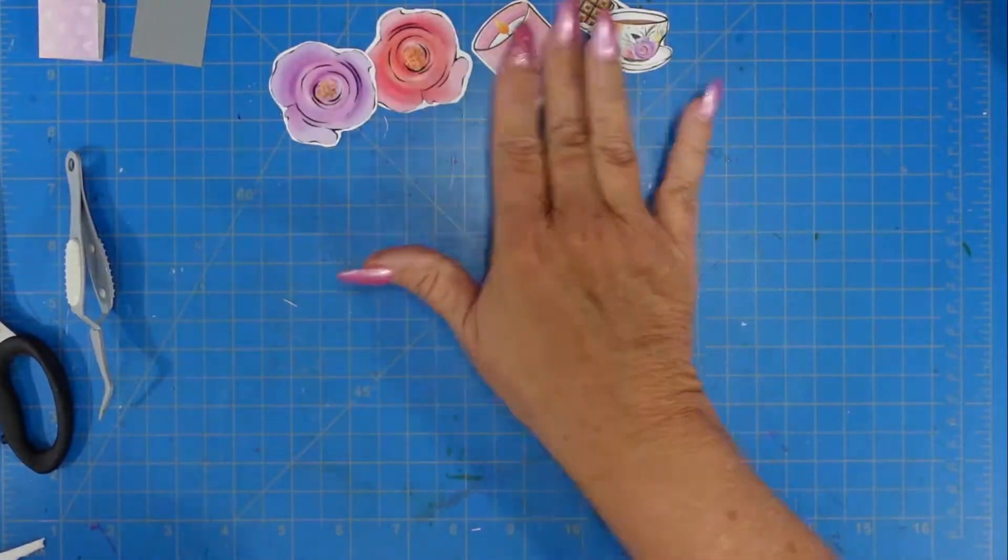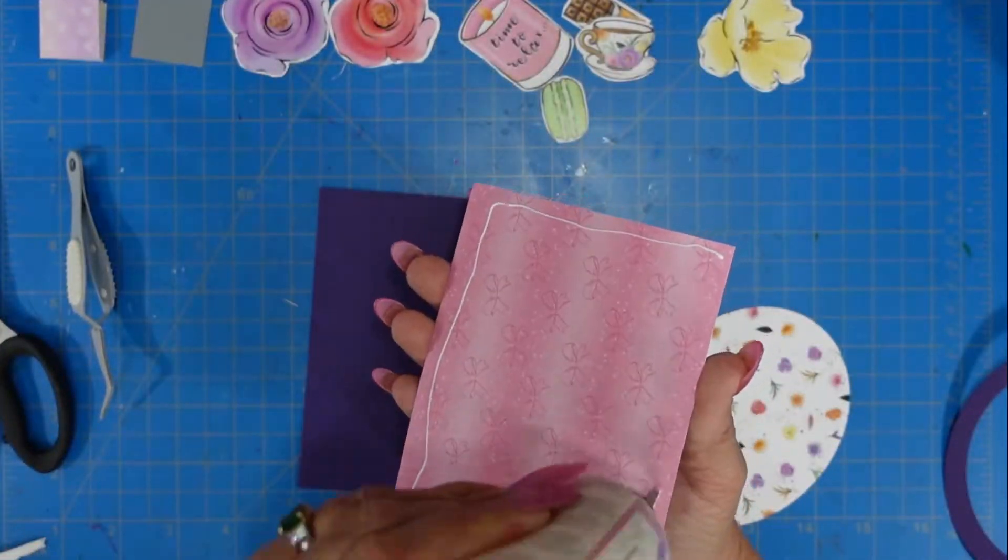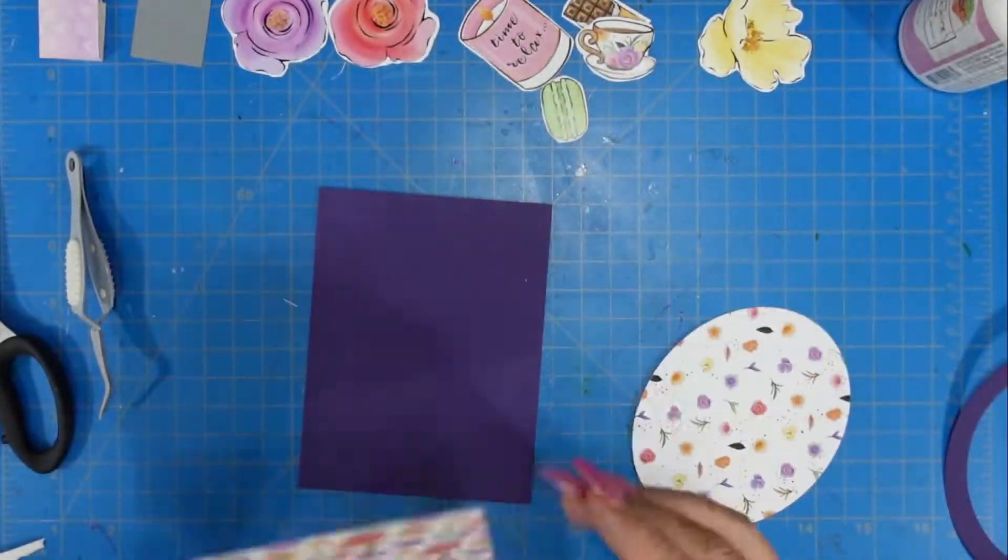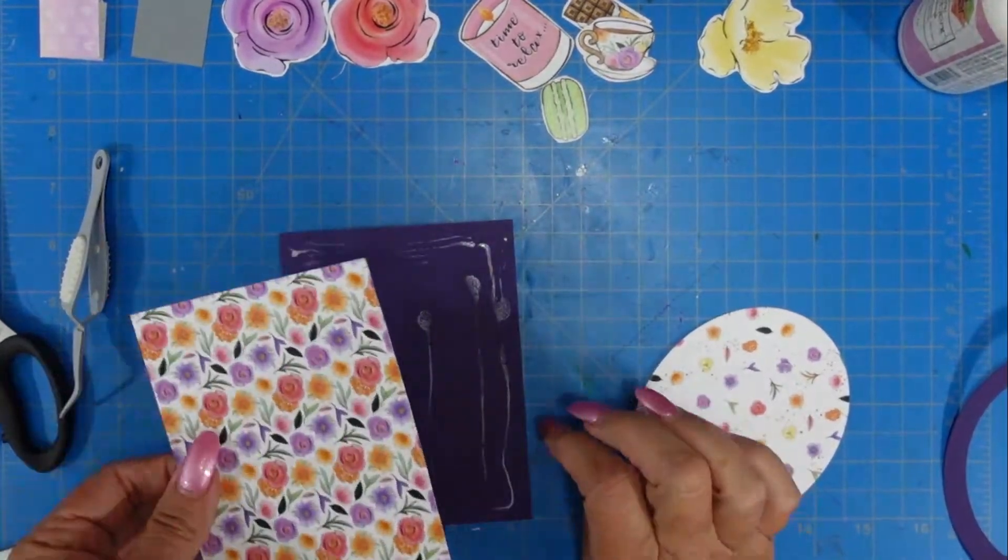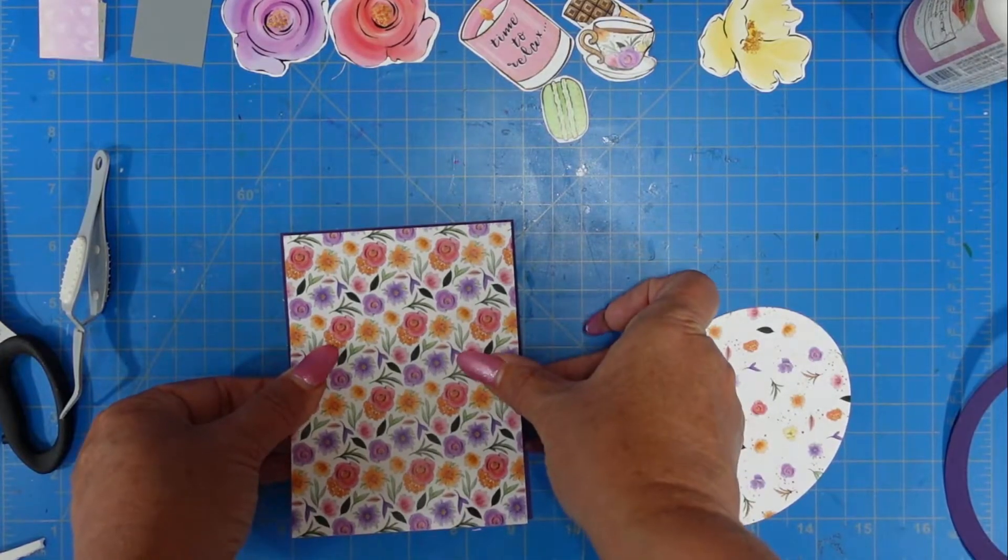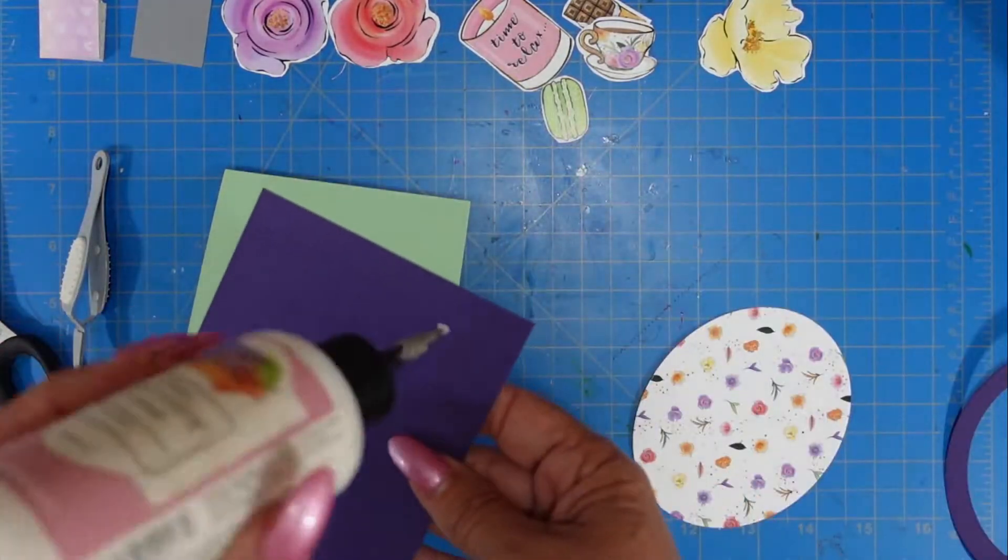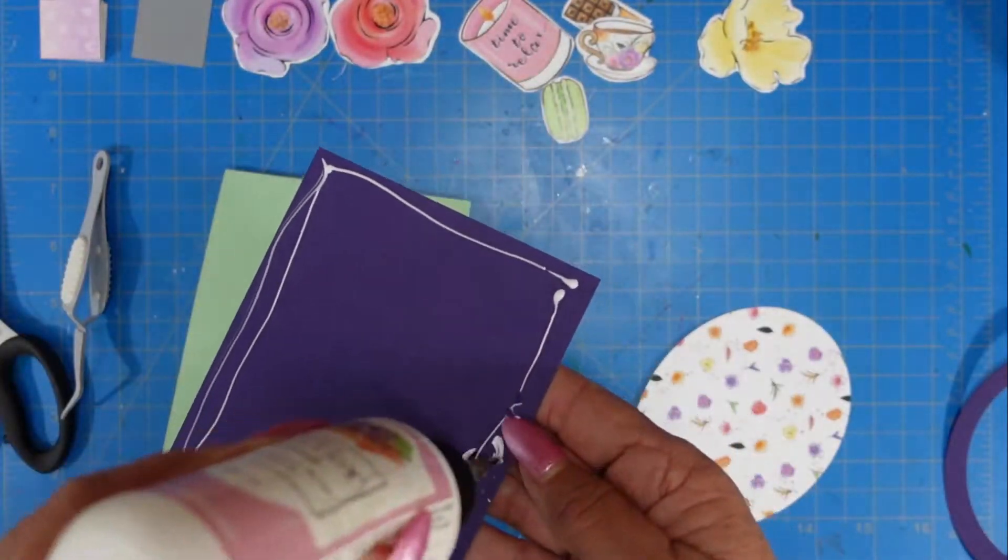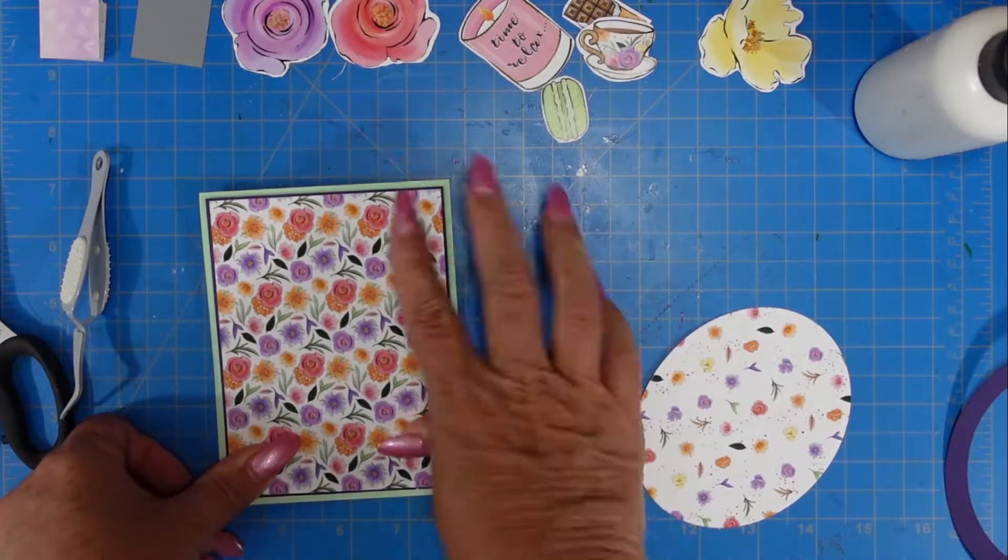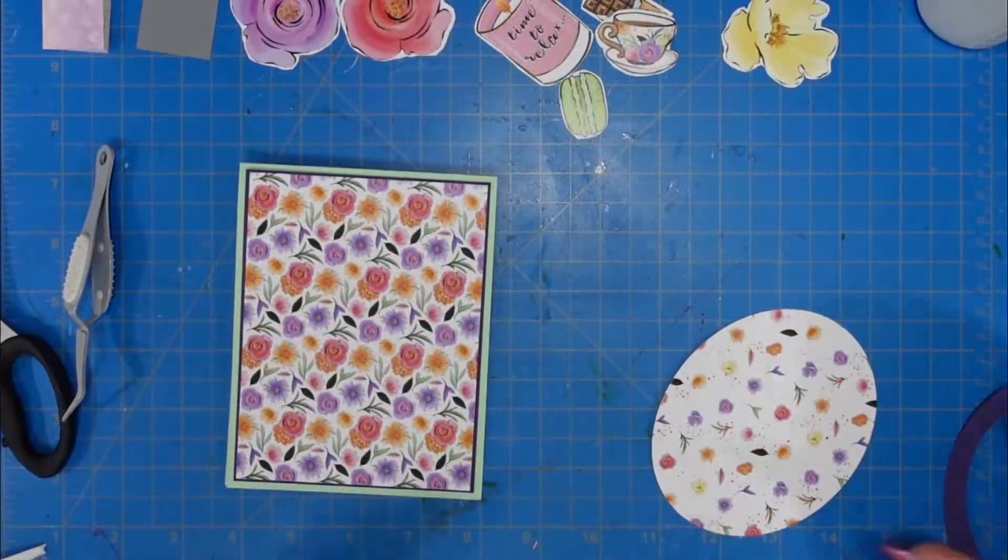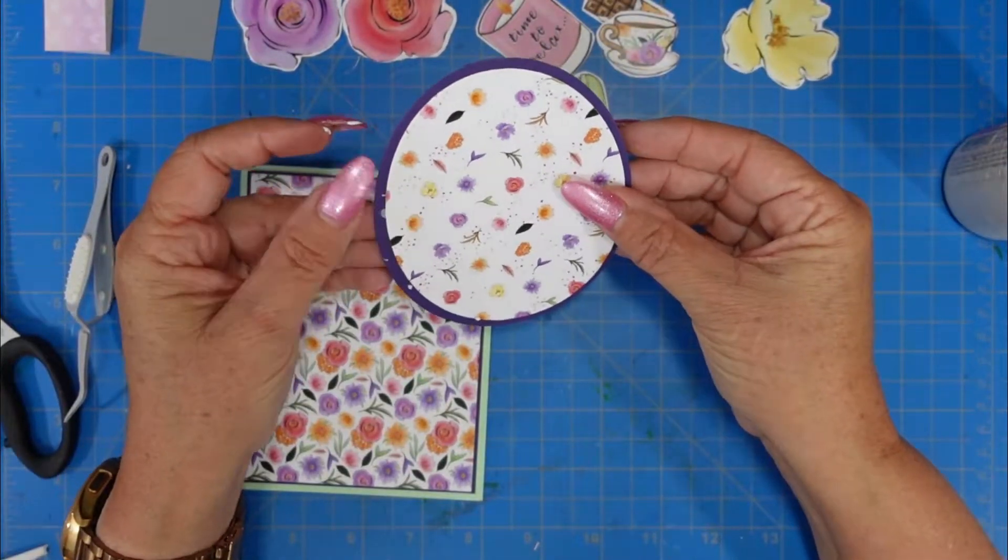All right, on to card number two. Card number two, again, I trimmed all of the ephemera pieces. I try to do odd numbers when I'm creating with any type of element, whether it be a die cut or an ephemera piece. I did cut that pattern paper to four by five and a quarter, and then I cut the purple layer an eighth inch larger. My card base is going to be that same mint pattern paper, top folding four and a quarter by five and a half.